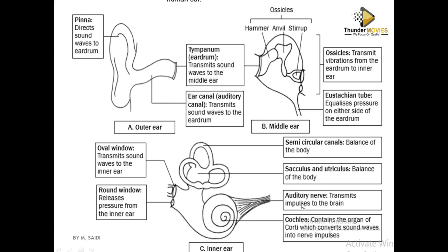The cochlea contains the organ of Corti. The organ of Corti, as I mentioned, is very important for converting sound waves into a nerve impulse — that is, converting the stimulus into a nerve impulse. The round window equalizes and releases excess pressure in the inner ear, and the oval window transmits the sound vibration into the inner ear.